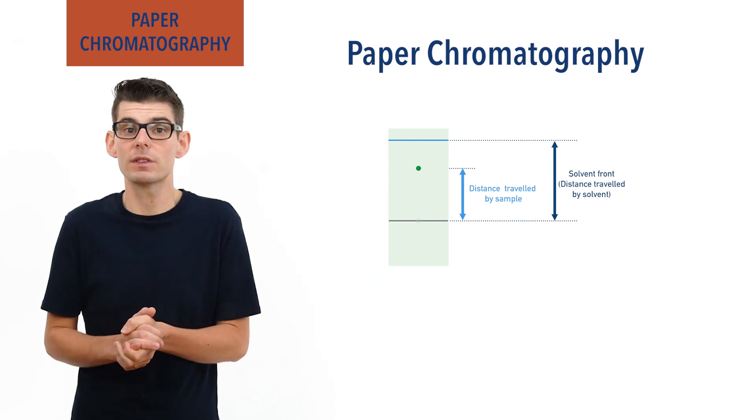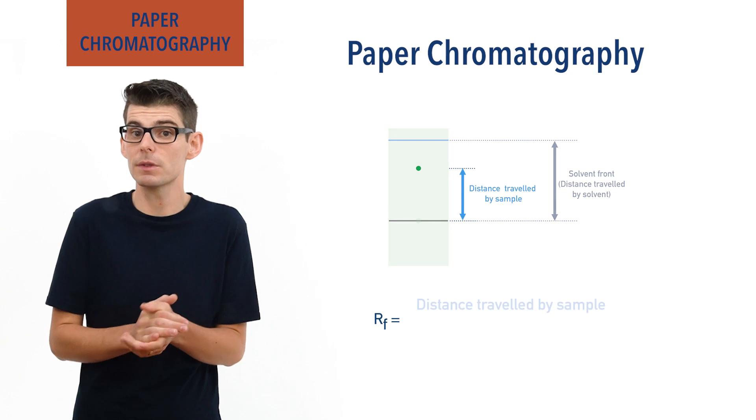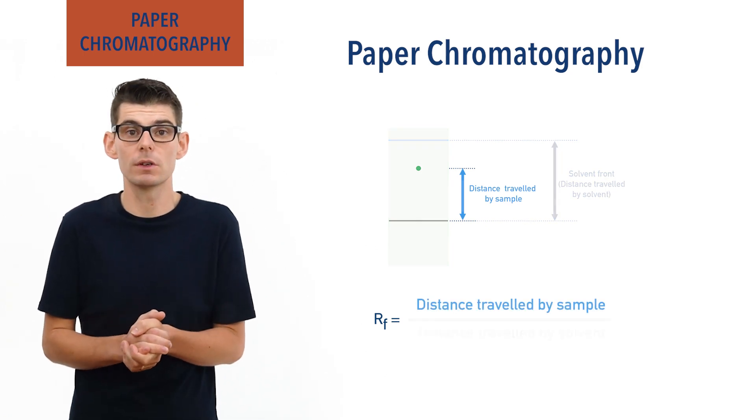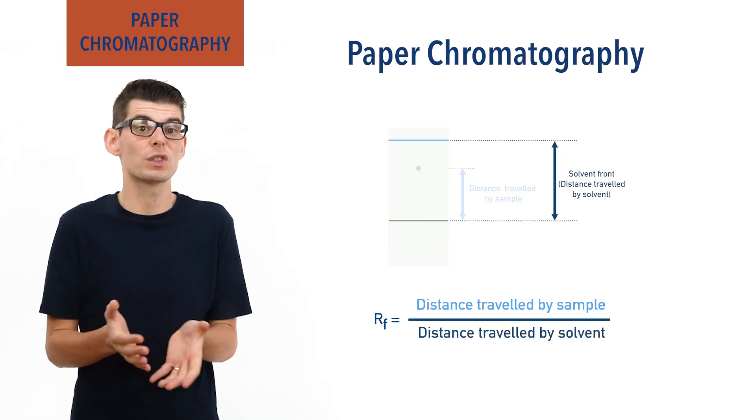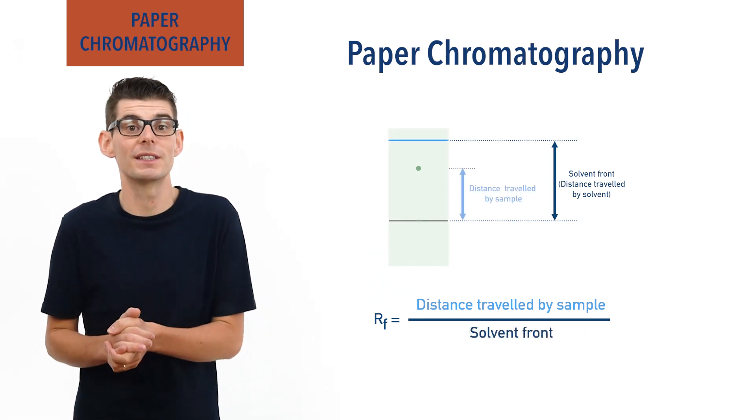The RF value of the substance is calculated by taking the distance travelled by the substance and dividing it by the distance travelled by the solvent, also referred to as the solvent front. Both of these distances have to be travelled in the same amount of time.